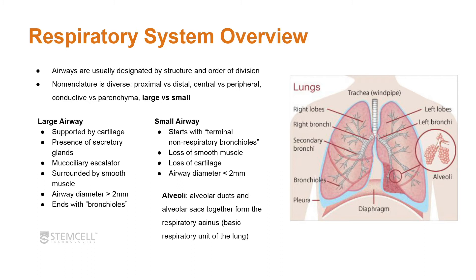The small airway starts with terminal non-respiratory bronchioles, and you see the loss of smooth muscle and cartilage. The airway diameter is also smaller, less than two millimeters. The airway ends with the alveoli, alveolar ducts and alveolar sacs, which together form the respiratory acinus — the basic respiratory unit of the lung where gas exchange takes place.